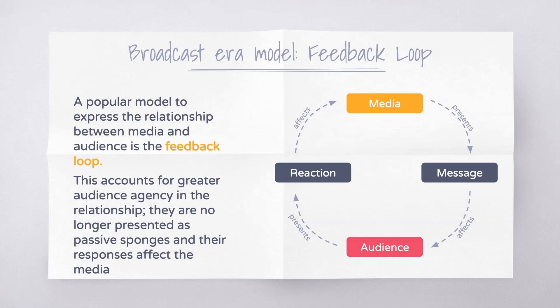Although the linear model obviously has some flaws in terms of presenting the audience as just a consumer, in the broadcast era another model became more popular: this is known as the feedback loop. This accounts for greater audience agency in the relationship, as audiences are no longer presented as passive sponges just absorbing information, but rather recognizes that an audience's reaction to a media message then has an effect on the media itself. The feedback loop essentially presents it as: the media presents a message, which affects the audience, who then presents back a reaction, which then affects the media.